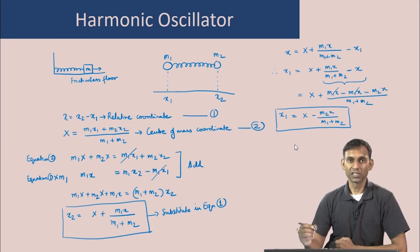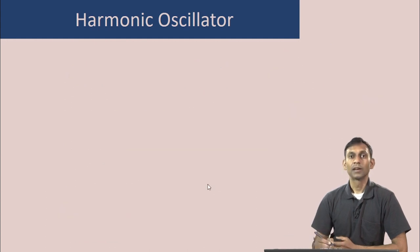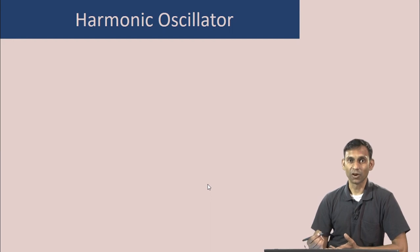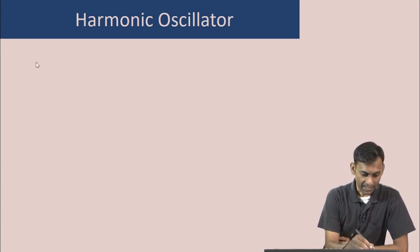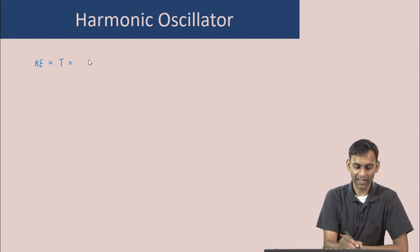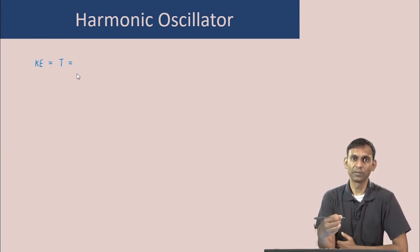We now have expressions for the coordinates of the two masses in terms of the center of mass coordinate and the relative coordinate. Let us consider what the Hamiltonian looks like for this two-mass system in terms of these new coordinates. The Hamiltonian has the kinetic energy operator and the potential energy operator. We will first write the classical expression for kinetic energy and then convert to the quantum operator.